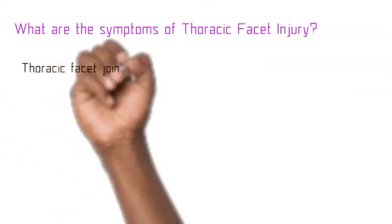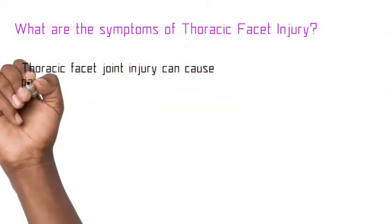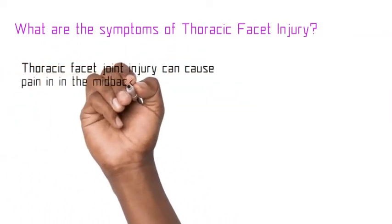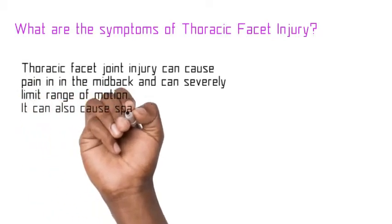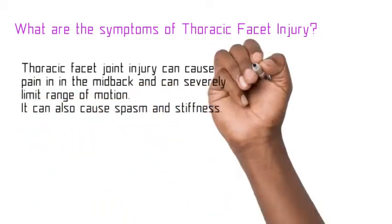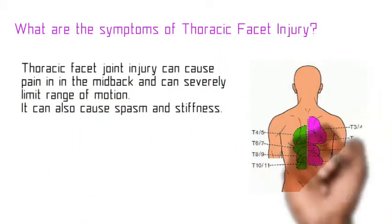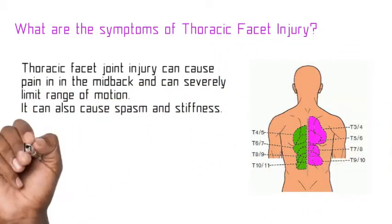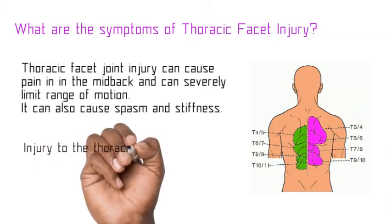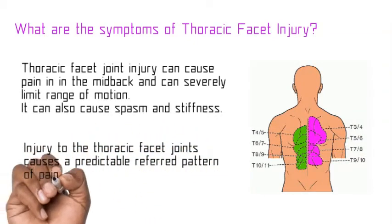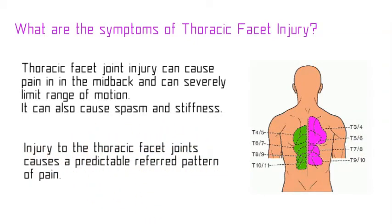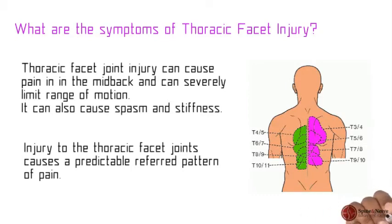What are the symptoms of thoracic facet injury? Thoracic facet joint injury can cause pain in the mid-back and can severely limit range of motion. It can also cause spasm and stiffness. Injury to the thoracic facet joints causes a predictable referred pattern of pain.